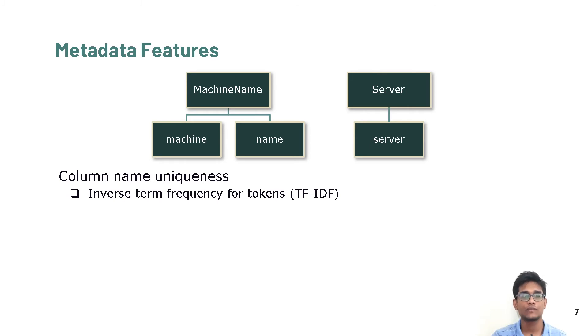We use column name uniqueness to represent the rarity of tokens occurring in the column name. We capture TF-IDF scores for each of the tokens in the data set. Tokens like ID, name, occur frequently in this data set, and thus, have a lower TF-IDF value. Column name uniqueness is the TF-IDF score of the rarest token in the column name.